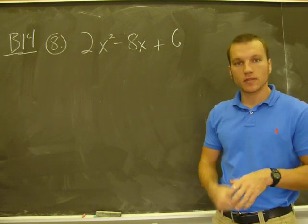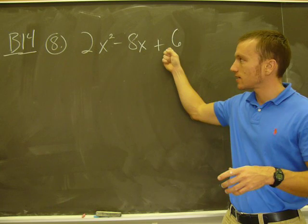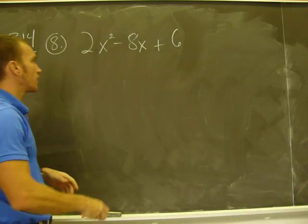So step 1, greatest common factor. 2x squared, 8x, and 6, these all have a 2 in them, so you can factor out a 2.